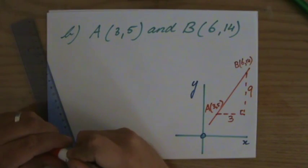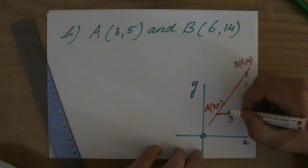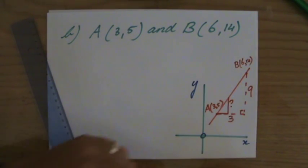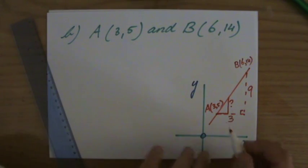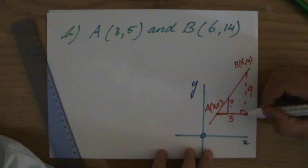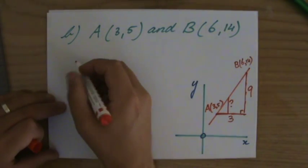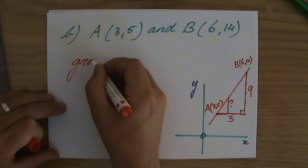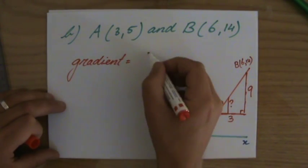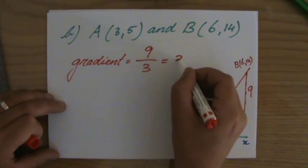Okay. Now the gradient is, if you go one step to the right, how many steps do you go up? That is, if you like, the definition of the gradient. Yeah? So if he goes 3 steps to the right, and 9 up, that means that the gradient is going to be 9 divided by 3. So the answer is 3.